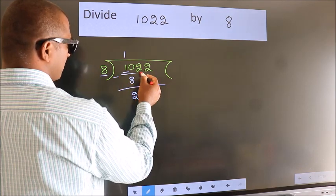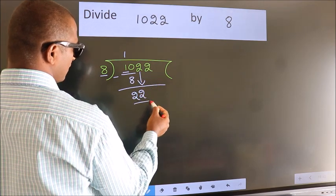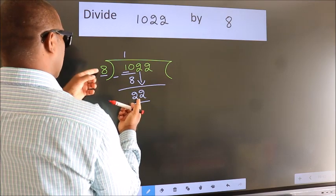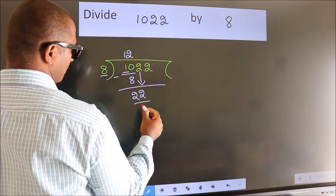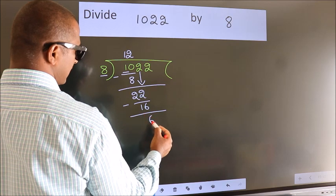After this, bring down the next number, 2, making 22. A number close to 22 in the 8 table is 8 twos, 16. Now we subtract and get 6.